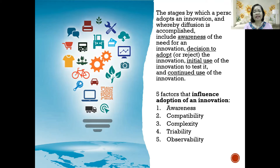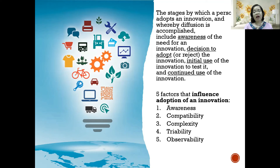Third is complexity — how easy is it for you to understand the innovation or to use it? For example, when Viber was first introduced, did you find it easy or difficult? This does affect the way people adapt to a new innovation. Fourth is tryability — if the innovation is still too expensive, is there an option to just try it out rather than fully committing to its use? And finally, fifth is observability — how we observe others using it and how we observe its functionality in our situation and in society.